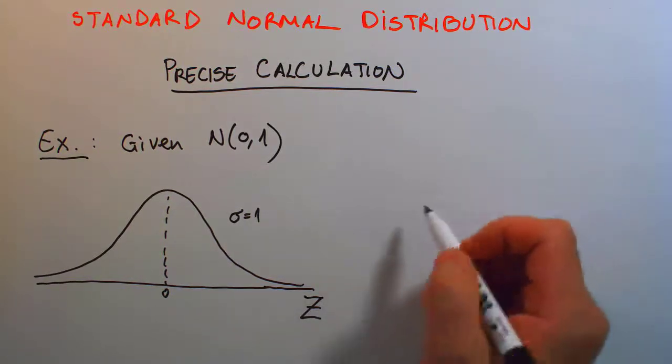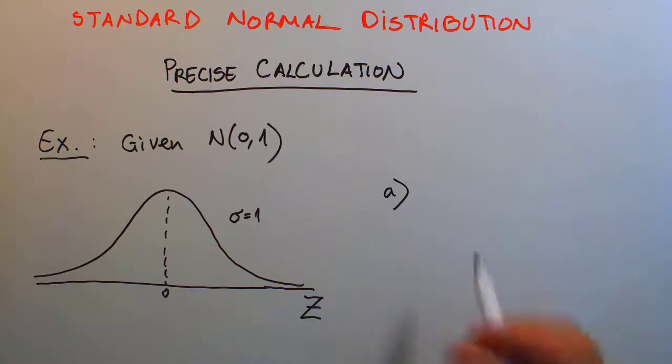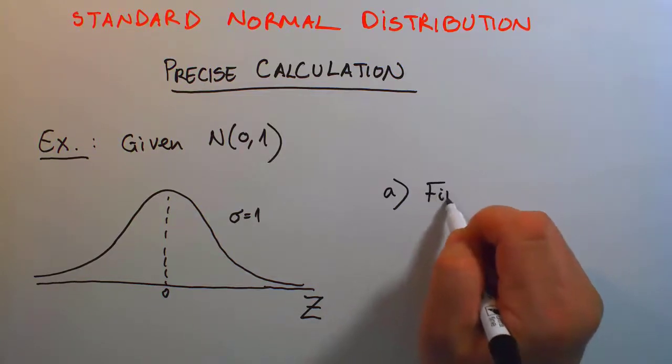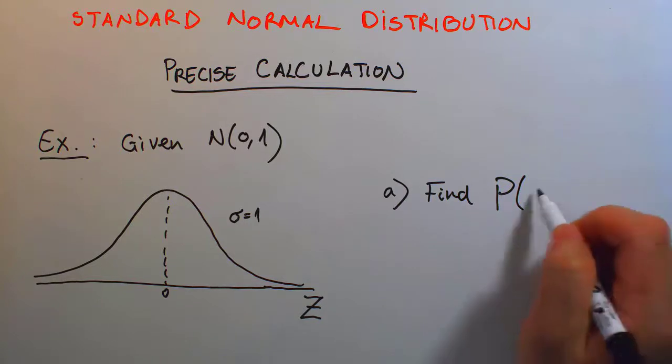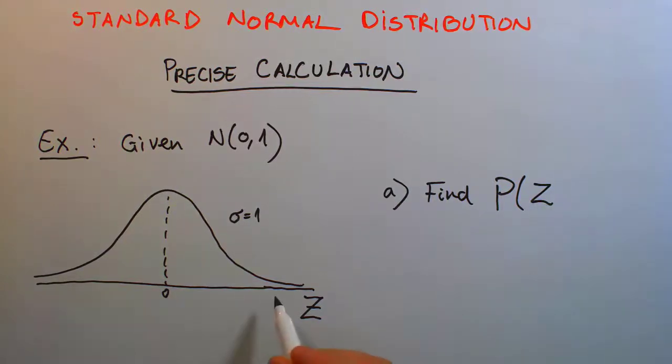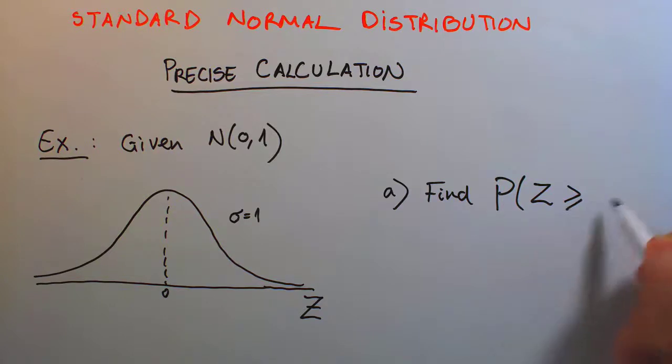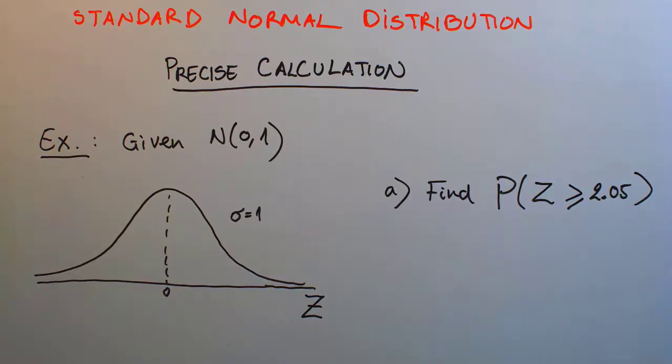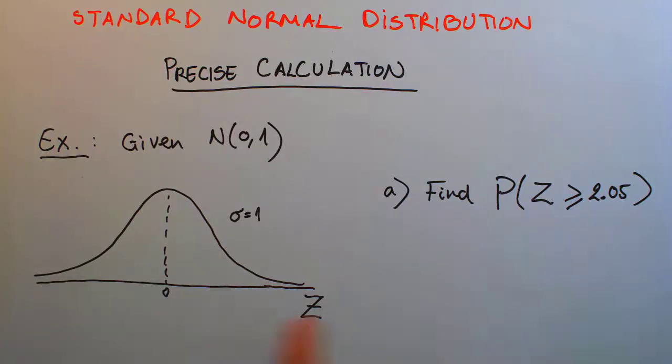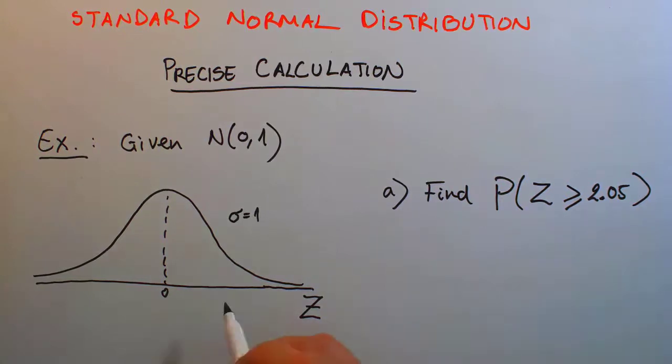For part A of the example, let's try to find the probability where z is greater than or equals 2.05. I recommend starting by making a sketch on this bell curve, because it will give you a planning of what to do. 2.05 is a value somewhere on this axis to the right hand side of zero, so positive 2.05 is about here.